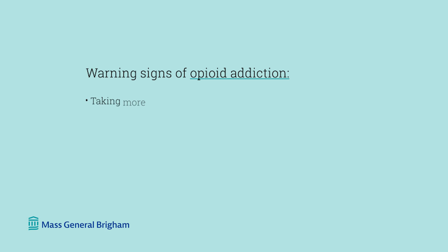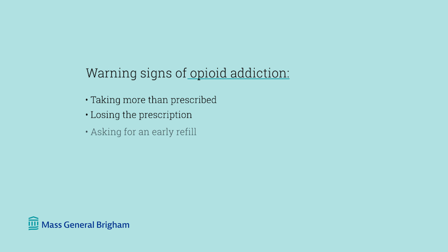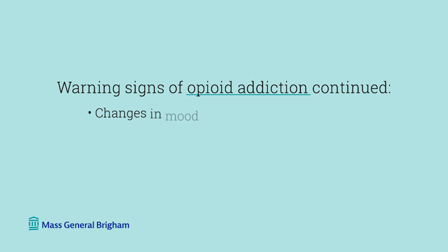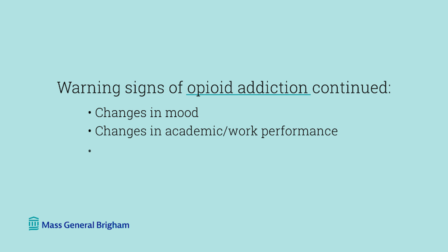Some of the warning signs we look for include things like taking more than prescribed, losing the prescription, asking for an early refill, going to different doctors or emergency rooms to get those medications, and forging prescriptions. Other warning signs include rapid changes in mood, changes in academic or work performance, appearing sedated, or nodding off with pinpoint pupils — a very classic presentation of somebody who's intoxicated on opioids.